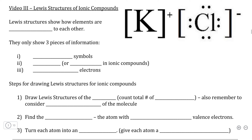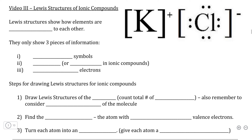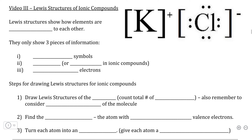Although we've looked at how to draw the Lewis structures of individual elements and ions in previous videos, the purpose of this video will be to show how Lewis structures are used to represent compounds, meaning substances that contain multiple atoms. The key difference of Lewis structures of compounds compared to individual elements is that the primary purpose of Lewis structures is to show how multiple elements are bonded to one another.